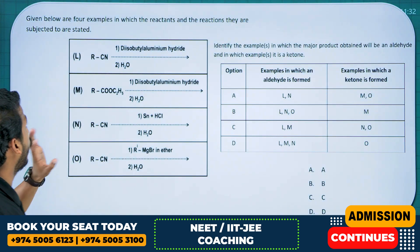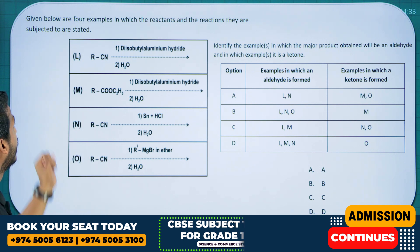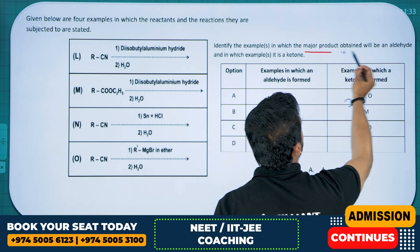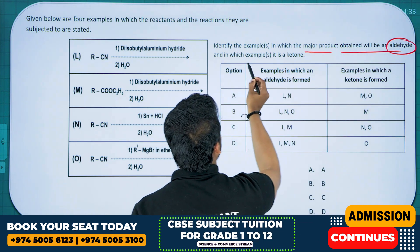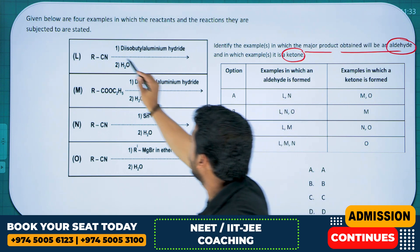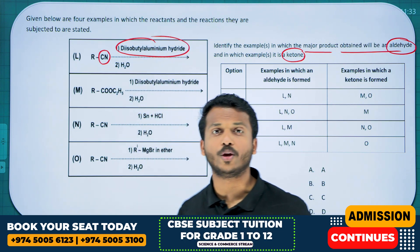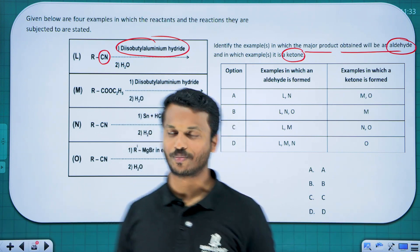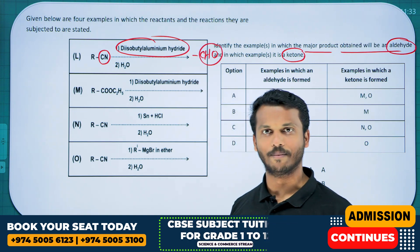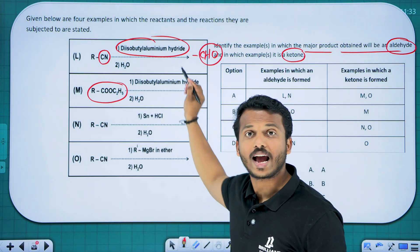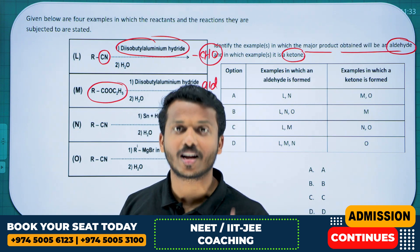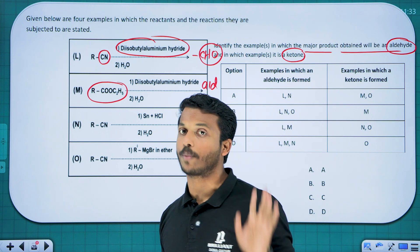Second question: given below are four examples in which reactants and reactions are stated. Identify the example in which the major product obtained will be an aldehyde, and in which example it is a ketone. This is a preparation part they are asking. Cyanide treated with di-isobutylaluminium hydride (DIBAL-H) — cyanide on reaction with DIBAL-H will give aldehyde. Ester also reacts with DIBAL-H and also gives aldehyde. So remember: cyanide and ester when reacted with DIBAL-H, we will get aldehyde, as we studied in the preparation part.